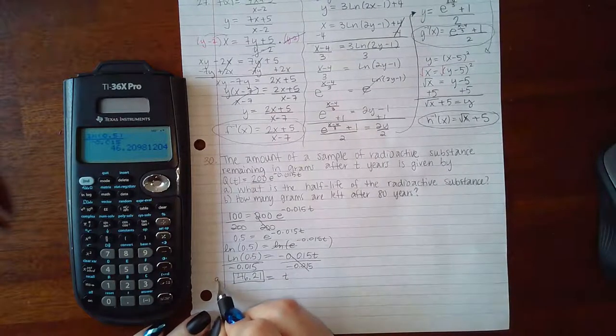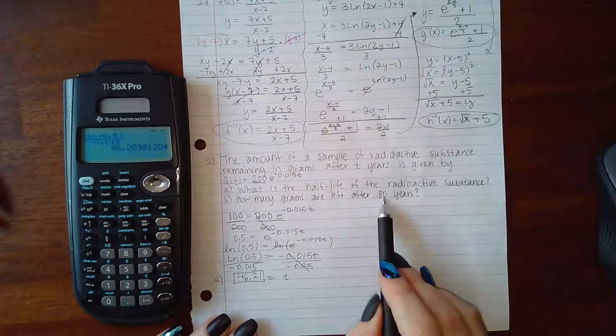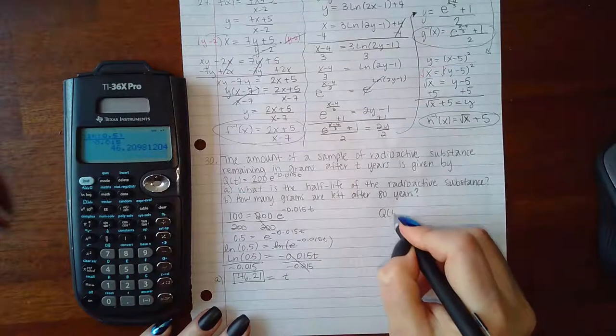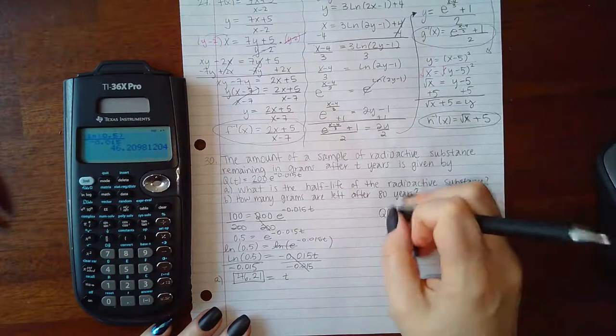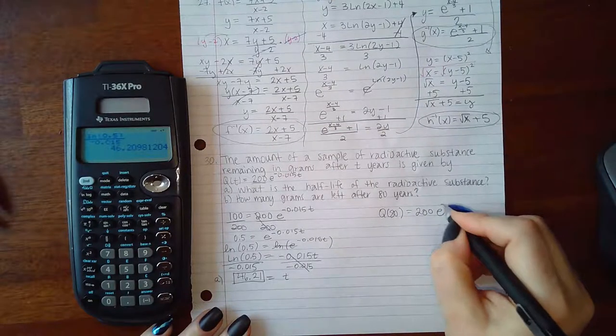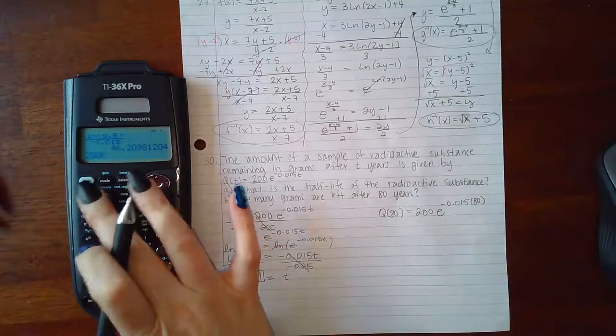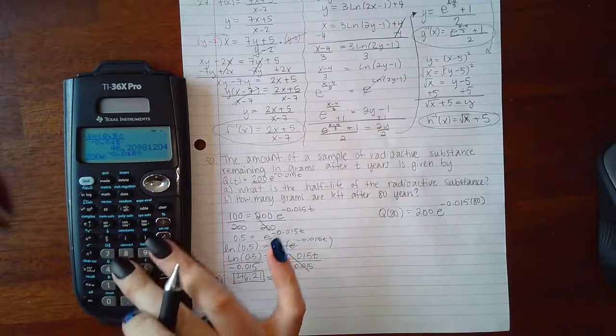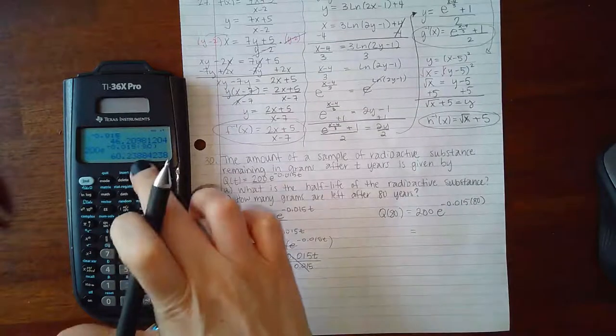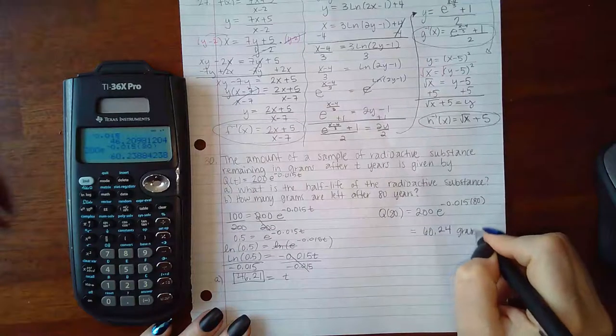And that's the answer for part a. For part b, it says how many grams are left after 80 years, so you're just going to take the problem and plug in 80 for the number of years. And I'm going to type that in my calculator: negative 0.015 times 80. And if I round that to the nearest hundredth, I'm going to have 60.24 grams remaining.